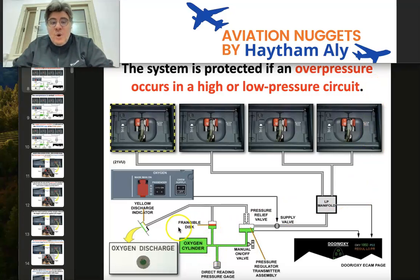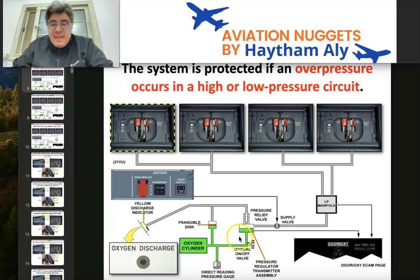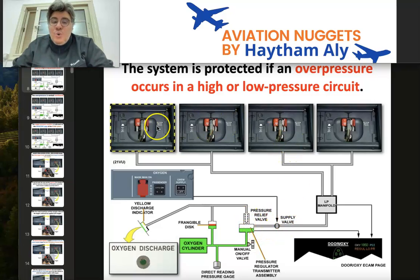We have an oxygen cylinder in the avionics compartment that supplies high-pressure oxygen to the flight crew quick donning masks. We have a maximum of four masks in the cockpit, located on the side console on the left of the captain and the right of the first officer. The cylinder has a direct reading pressure gauge, a manual on/off valve, and a pressure regulator transmitter assembly that reduces pressure from the high-pressure gas cylinder to a reasonable level supplied through the supply valve to the crew quick donning masks.